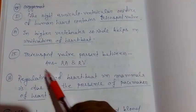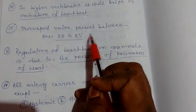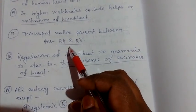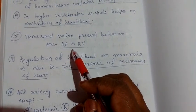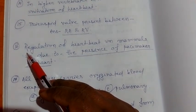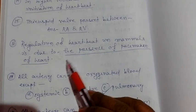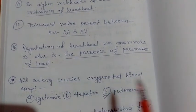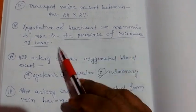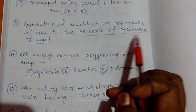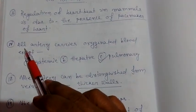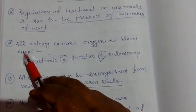Question number 15: the tricuspid valve is present between the right auriculoventricular and right ventricle. The bicuspid valve, or mitral valve, is present between the left auriculoventricular and left ventricle. Question number 16: regulation of heartbeat in mammals is due to the presence of the pacemaker of the heart. The pacemaker is the SA node — it controls the speed of the heartbeat.